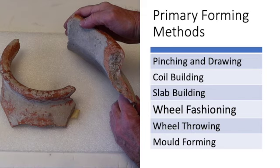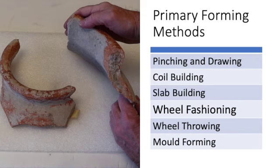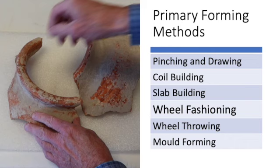Sherds made with wheel fashioning, such as thinning and shaping the walls of a coil-built vessel on a so-called slow wheel, can be tricky to identify because some of their traces look very similar to the traces on wheel-thrown pots.